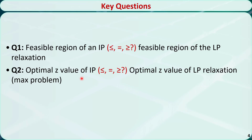Question 2: For a maximization problem, which optimal z value is larger — an integer programming problem or its linear programming relaxation? The answer is that, in general, the linear programming relaxation has a larger optimal z value, because the feasible region is larger and it has more options or a better chance to contain the largest z value.